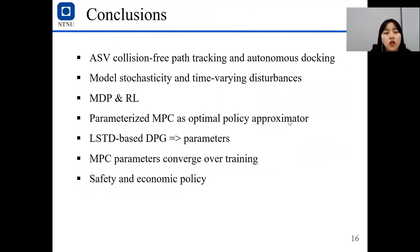Okay, so in this work, we try to do a collision-free path tracking and autonomous docking controller for the ASV. Although there exists model uncertainty and time-variant disturbance, we can solve the problem by formulating the freight mission problem into an MDP. And we use a parameterized MPC as an optimum policy approximator and use the LSTD-based deterministic policy gradient to find the best parameters that minimize our performance function j. And we see that the MPC parameters will converge over learning steps. And finally, we find the safety and economic policy pi_theta_star. Thank you.